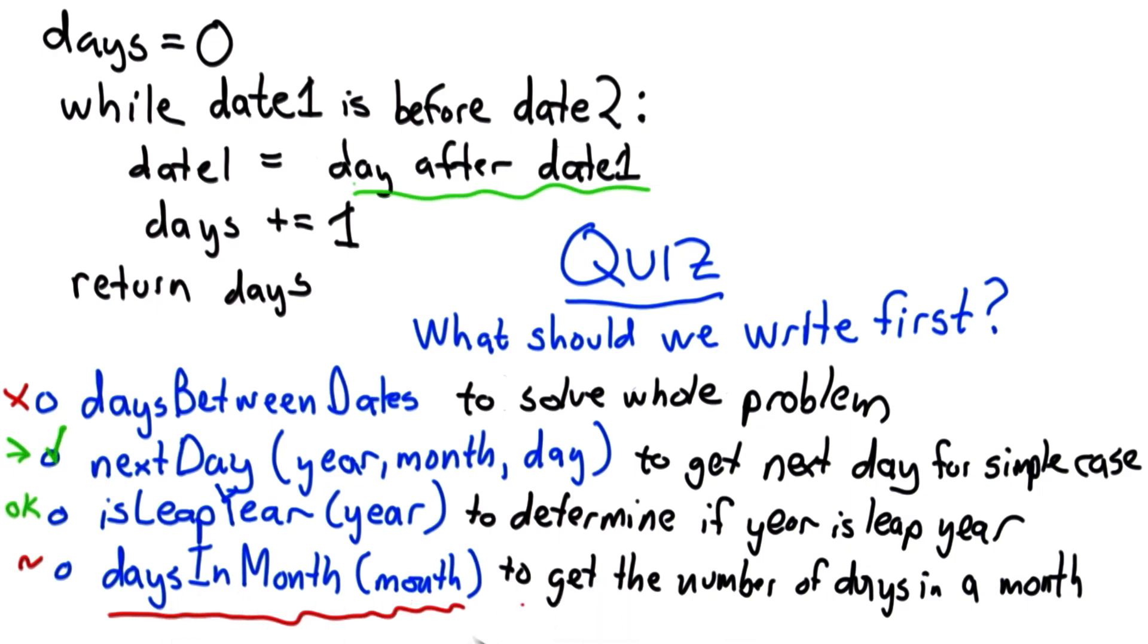And the reason I'm going to suggest that this is not what we want is the number of days in a month actually depends on the year, if the month is February.